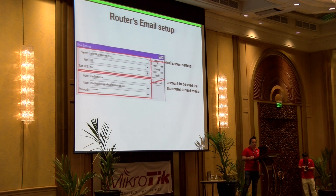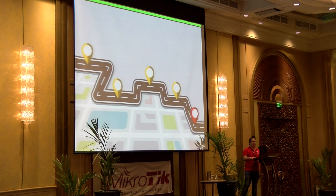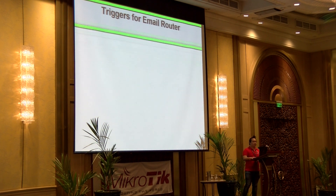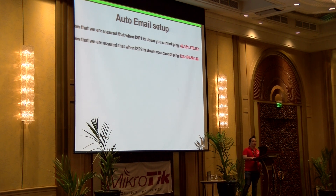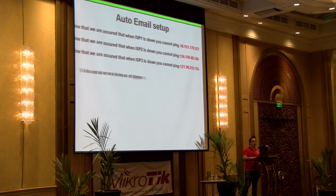What is the body of the email that you should send? We need a trigger for emails — auto email. Now that we have assured that when you cannot ping 49.151 ISP1 is down, when you cannot ping 124 ISP2 is down, and when you cannot ping 121 ISP3 is down, we can assign them as triggers. We will use Netwatch.